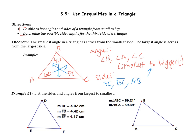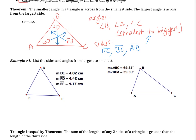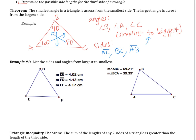Let's look at example one. It says list the sides and angles from largest to smallest. We're given side lengths, so I'll start by marking that information on the figure. DE is 4.02, FD is 4.42, and EF is 4.17. The largest side is DF at 4.42, EF is in the middle, and the smallest side is DE.